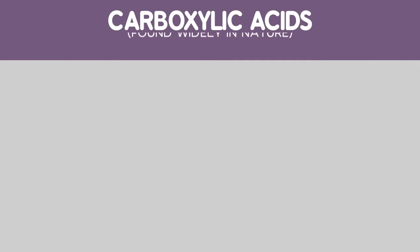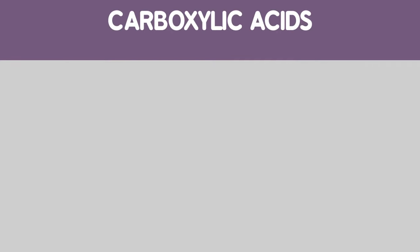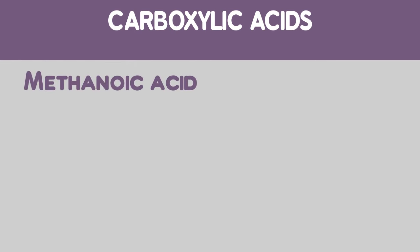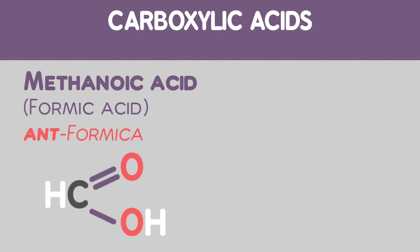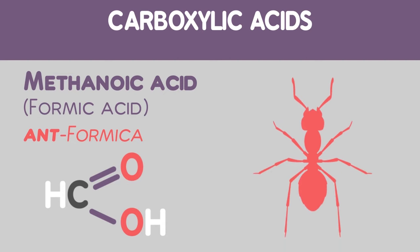Carboxylic acids are found widely in nature. First up, methanoic acid. Methanoic acid is commonly called formic acid, from the Latin for ant — formica — as it is the compound red ants inject into their prey.